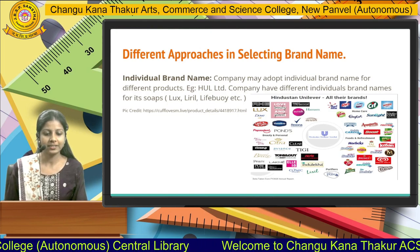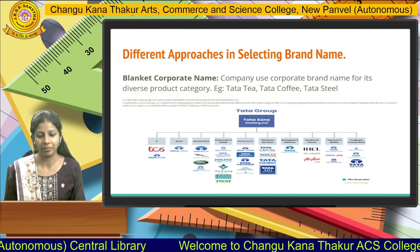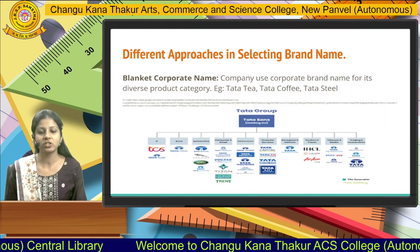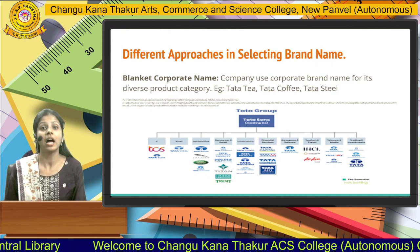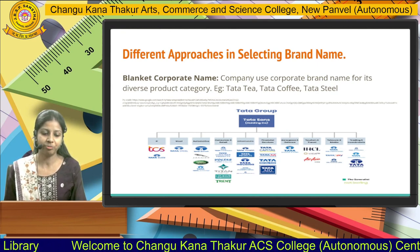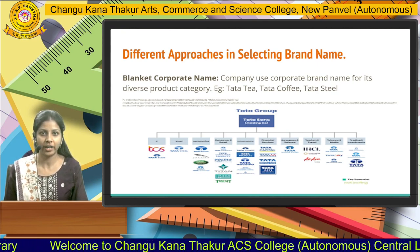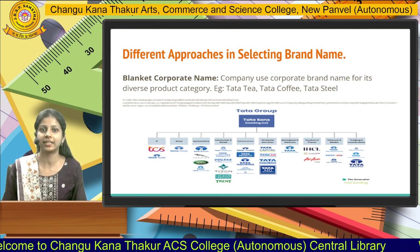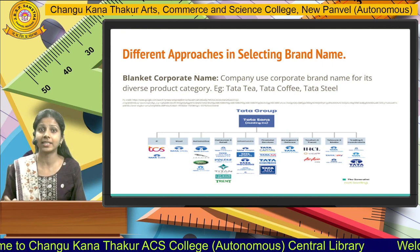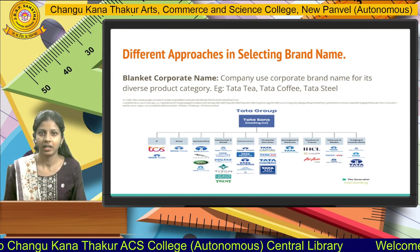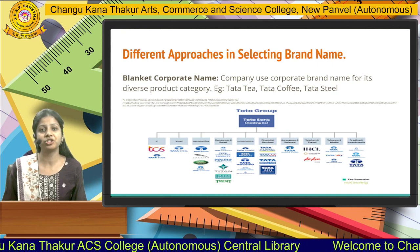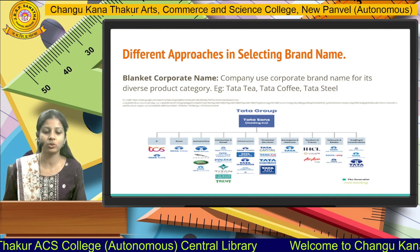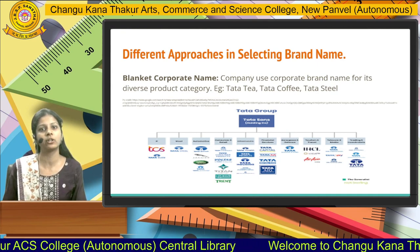Next we have blanket corporate name — here a company uses a corporate brand name for its variety of product categories. For example, Tata Tea, Tata Coffee, Tata Steel, Tata Electricity, Tata Motors. Here the brand name is associated with the product, which is why it is known as blanket corporate name.